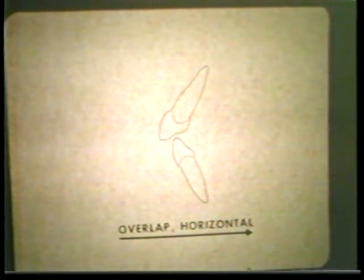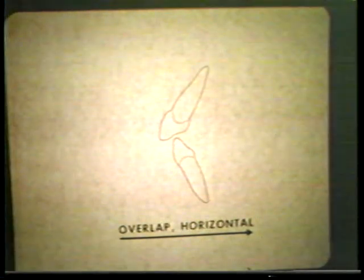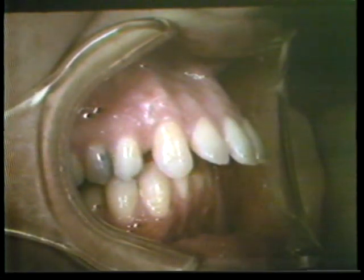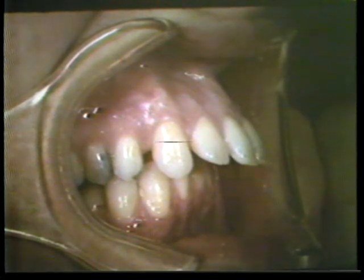Overlap which occurs in the horizontal plane — the distance between the anterior maxillary segment and the anterior mandibular segment — is referred to as overjet. Here is a case of severe horizontal overlap or overjet. The degree of horizontal and vertical overlap is very important to us clinically, and part of our initial diagnosis should rest in determining the degree of both horizontal overlap and vertical overlap.